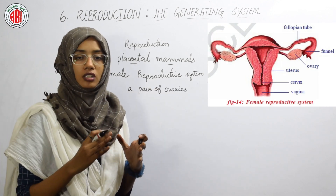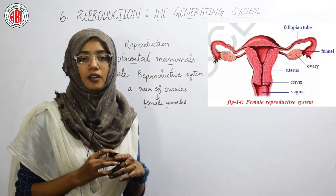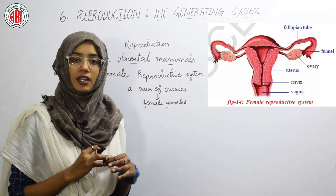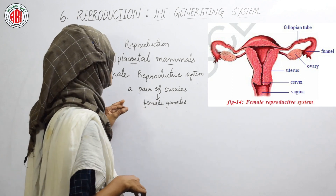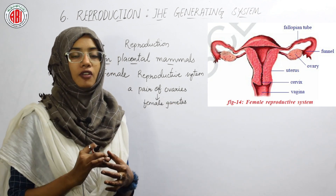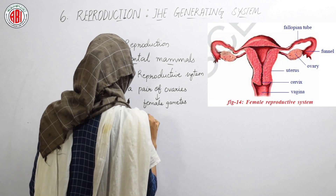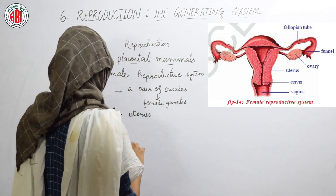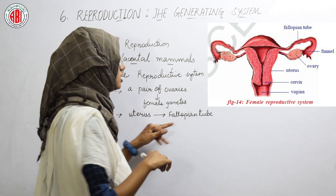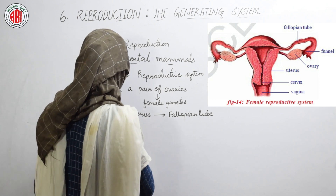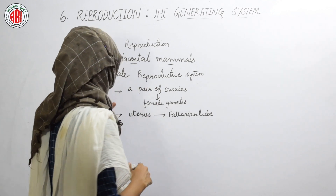The female reproductive system consists of a pair of ovaries. The ovary is the main female reproductive organ because it helps in the production of female gametes. The ovaries are located inside the body — unlike the testes in males, which are present outside in the scrotal sac. The female reproductive system also shows a muscular bag-like structure called the uterus, which has tubes on both sides called fallopian tubes. The fallopian tube ends in finger-like projections or a funnel-shaped ending connected to the ovary.